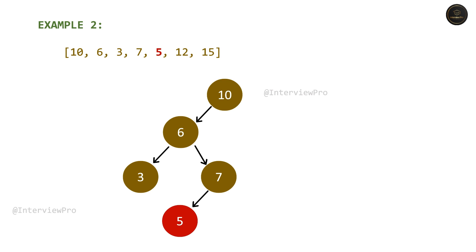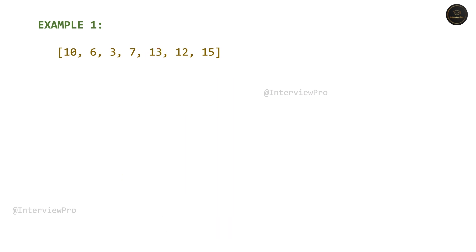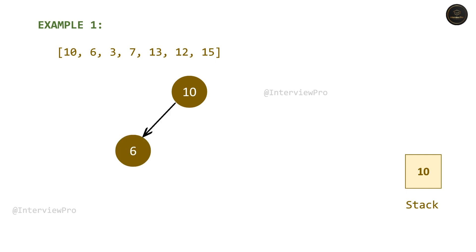Let's try to solve this problem. Let's go back to example 1 again. Every time we visit a node, let's track it using a stack. So as soon as we see node 10, which is valid, just push it onto the stack. Now we have 6 — this is also a valid node, so push it onto the stack. Then we have 3, which is also valid, so push it to the stack.